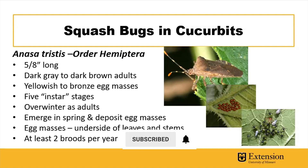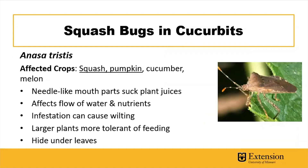In Missouri, research has shown we have at least two broods per year of the squash bug, so you'll likely be dealing with multiple generations throughout the growing season. The crops most commonly affected are squash and pumpkin, though they can affect other cucurbit crops. Insects in the order Hemiptera have needle-like mouthparts — stink bugs are another one in this order.